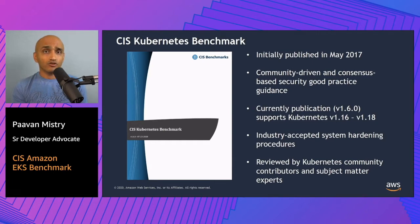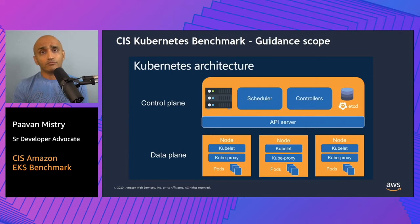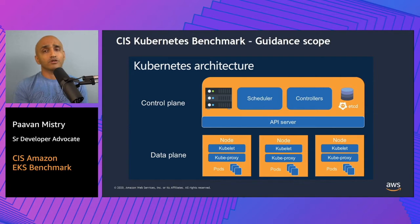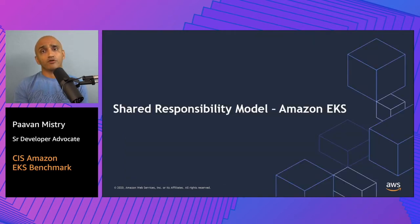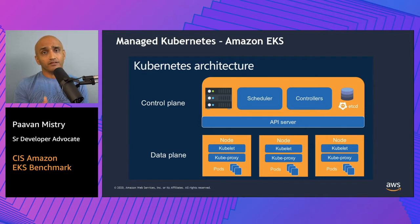The important note about the CIS Kubernetes Benchmark is that its scope is applicable to both control plane and data plane, where customers are typically managing both — also referred to as unmanaged Kubernetes clusters. This brings us to the shared responsibility model of Amazon EKS, which provides a managed Kubernetes service where it is important to understand the shared responsibilities, particularly for security and compliance.